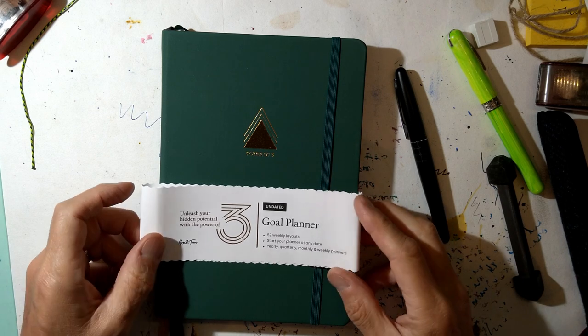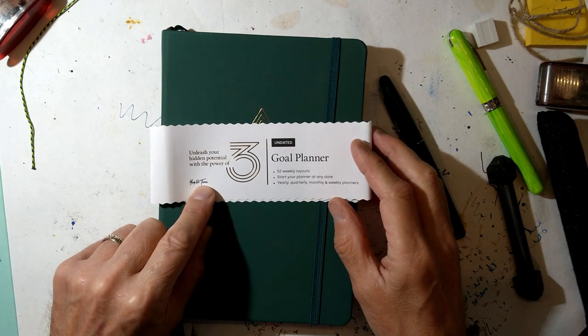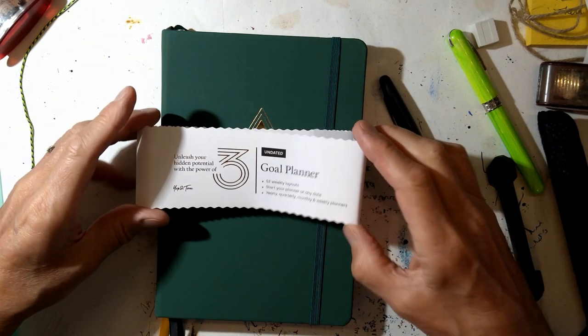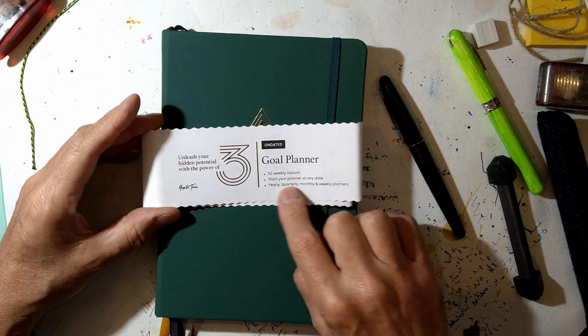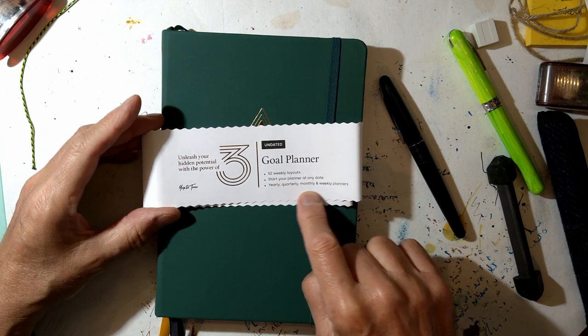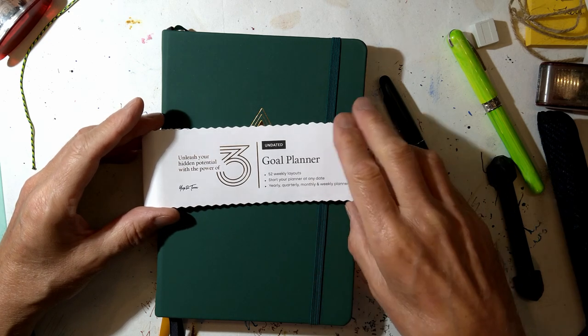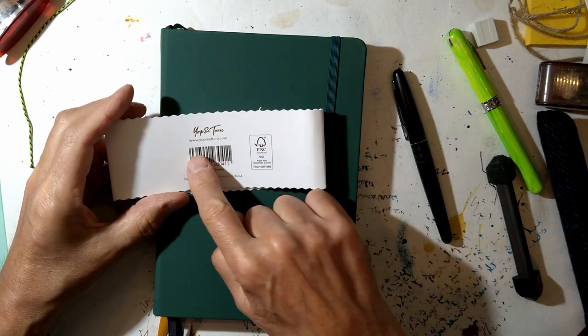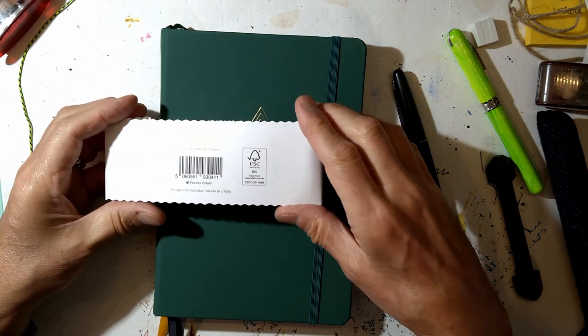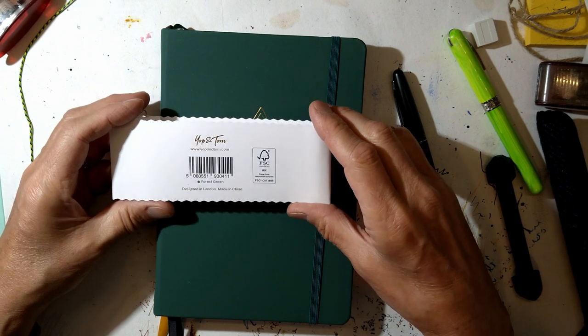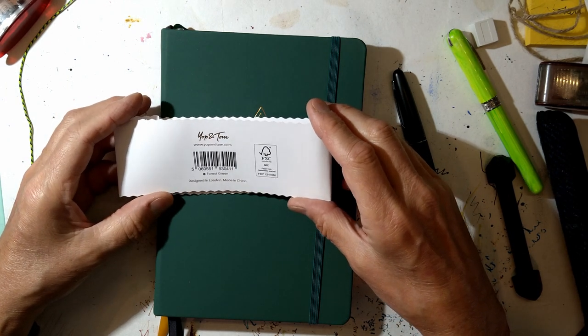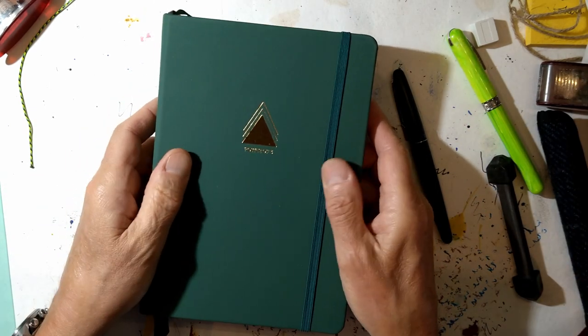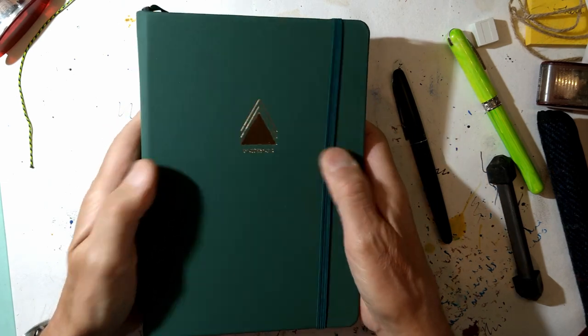Next up, here is the Yop and Tom Power of Three Goal Planner. This is the little sleeve that comes with it. It says 52 weekly layouts, start your planner at any date, yearly, quarterly, monthly and weekly planners. Other information it's got? It's Yop and Tom from www.yopantom.com, designed in London, made in China. Shame about the Chinese bit, but you can't have everything.